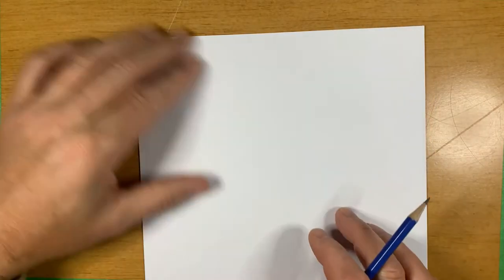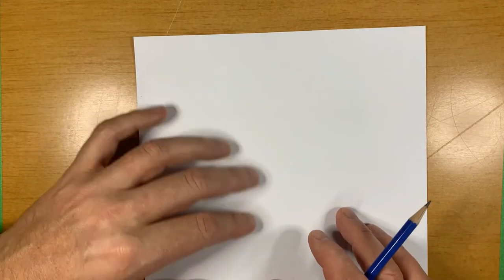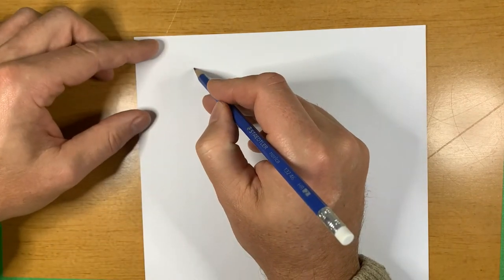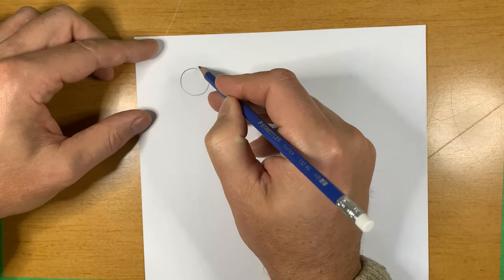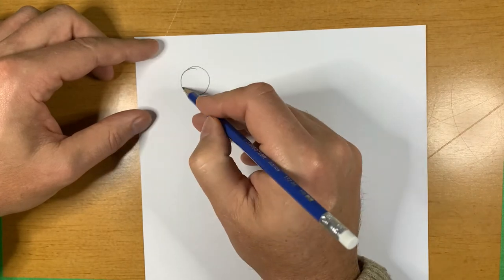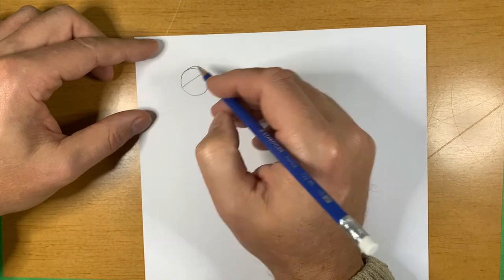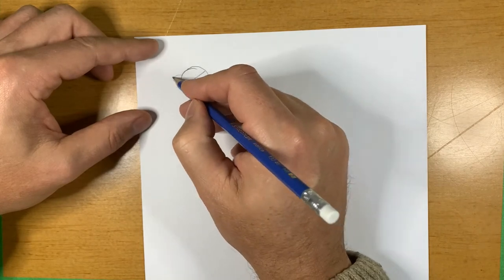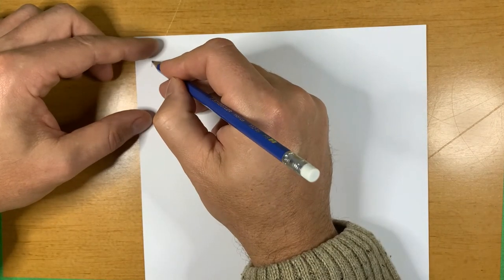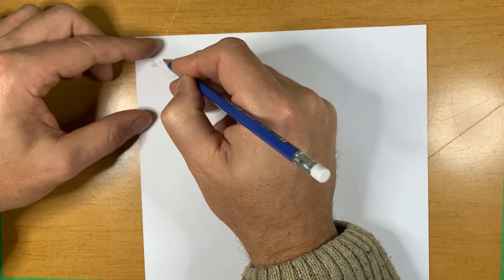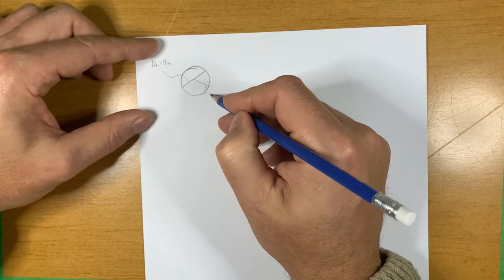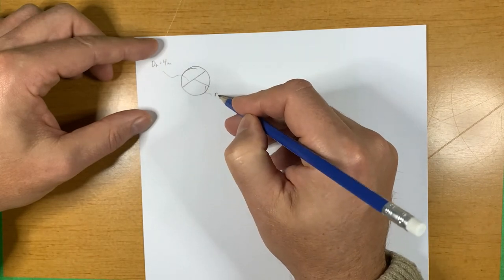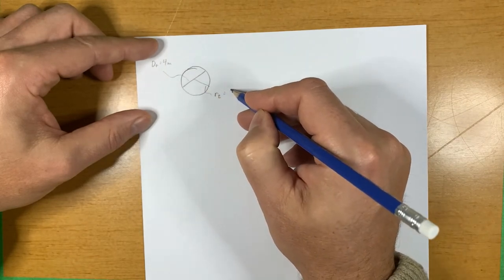As I always say in class, the first step is to sketch the problem. So we have a very simple situation. We're talking about a circular tunnel.